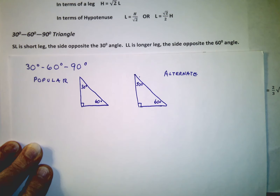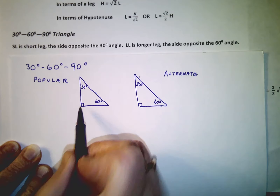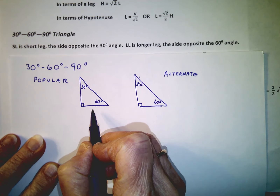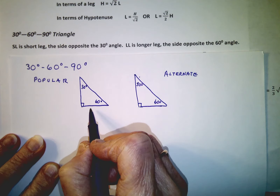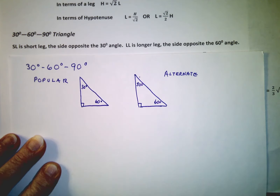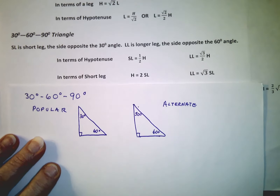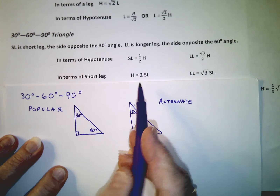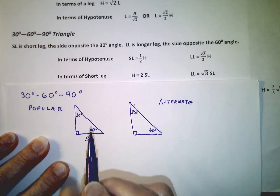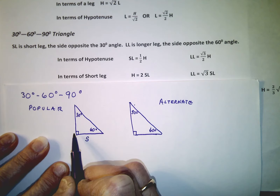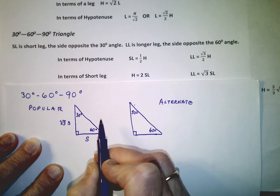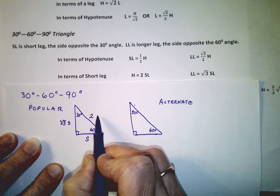In the 30-60-90 degree triangle, which is actually half of an equilateral triangle, the most popular representation is based on the length of the shortest side — the one across from the 30-degree angle. The side across from the 60-degree angle is the square root of 3 times the short side S, and the hypotenuse is twice as long as the short side. There's a very nice relationship between the shortest side and the hypotenuse.